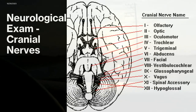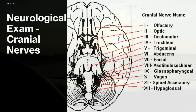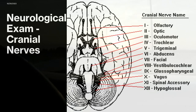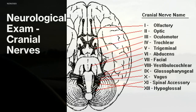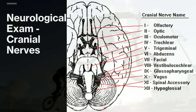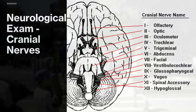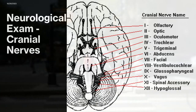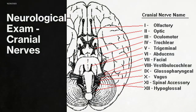Cranial nerves nine and ten are lumped together. They manage sensation at the back of the palate and the gag reflex. If a person has a natural gag reflex, that's fine. However, if a person is constantly clearing their throat, they may be aspirating, which can indicate something is wrong with the gag reflex and warrants further investigation.